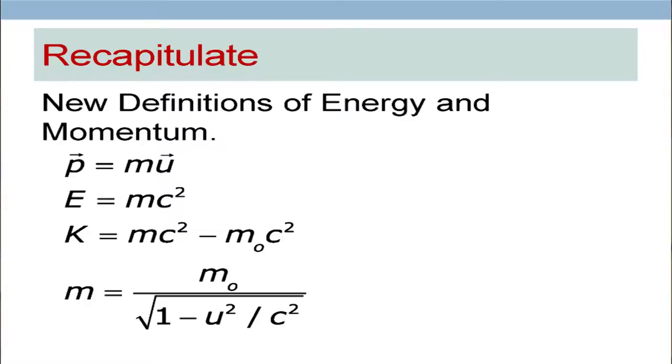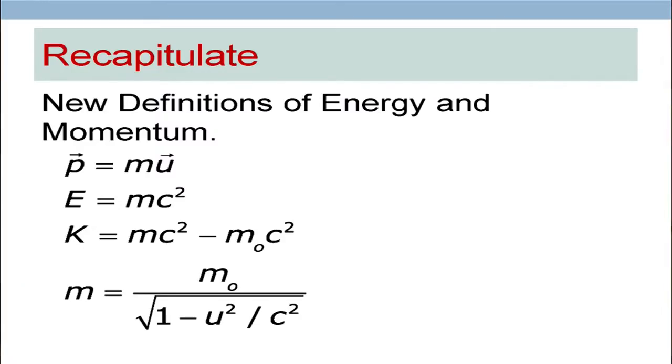Then we defined the energy, E is equal to mc squared. If you make the speed very small in comparison to the speed of light, this will not reduce to the classical energy, because this is a totally new concept of energy. The kinetic energy should be regarded as the difference of mc squared and m0c squared, because even if the particle is at rest, it possesses the energy m0c squared. This rest mass m0 is supposed to carry all other forms of energy.